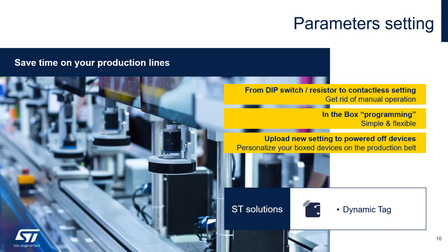Another popular use for NFC is automatic parameter setting. This could eliminate the use of DIP switches. Not only could you reprogram the EEPROM in your system, but you could do that while it's in the box or in its final form factor. Through energy harvesting, you can power up the unit through the NFC tag and access the EEPROM to update new settings.